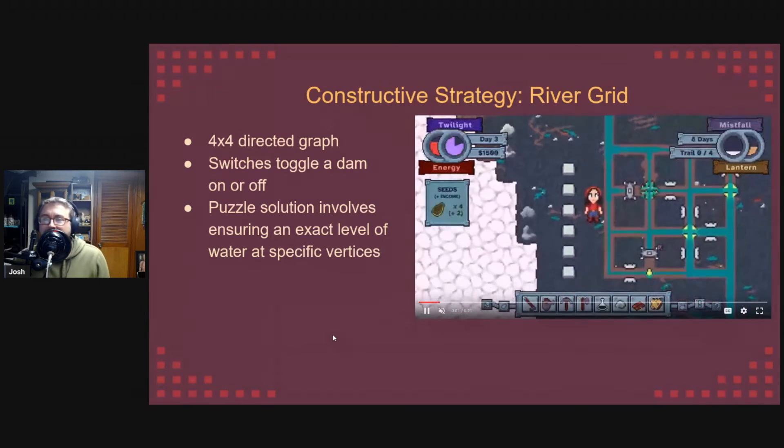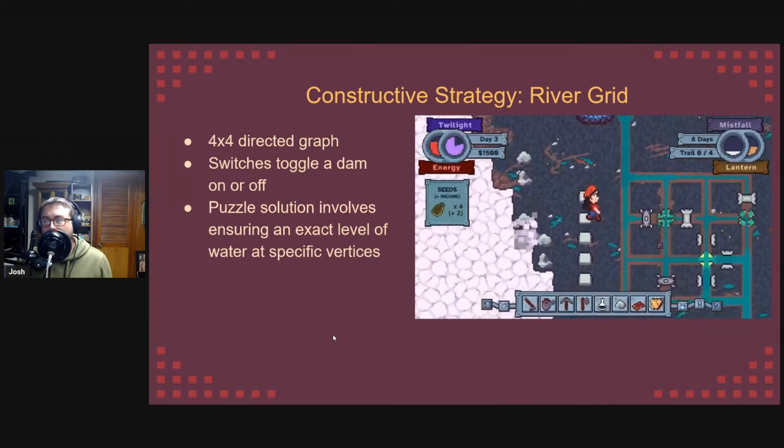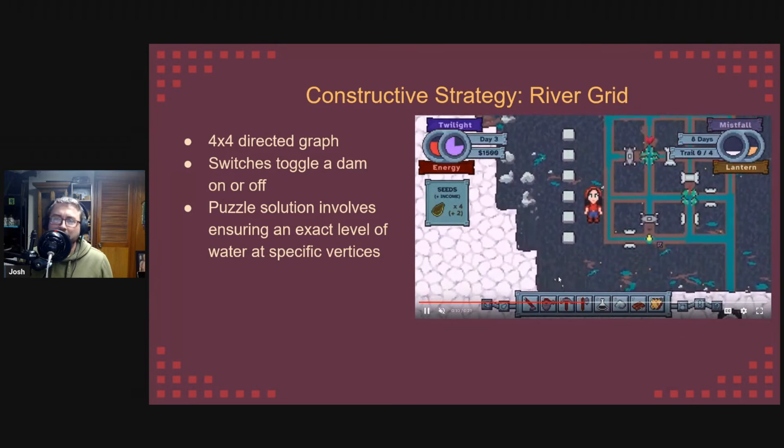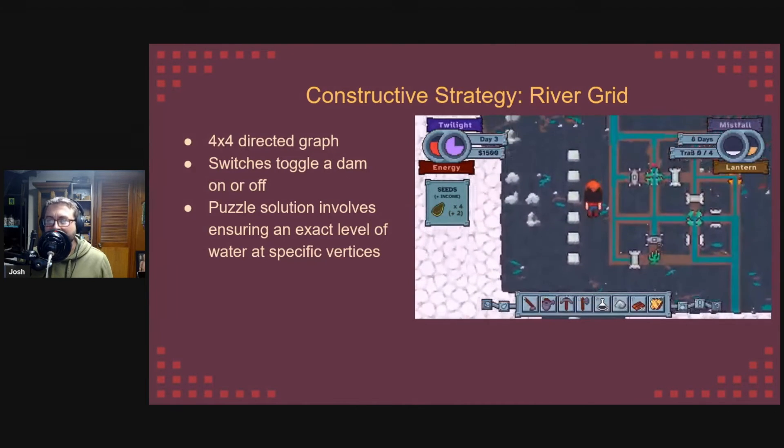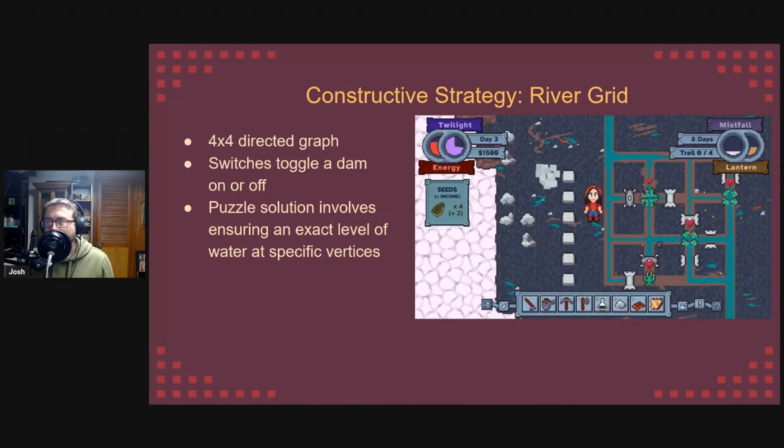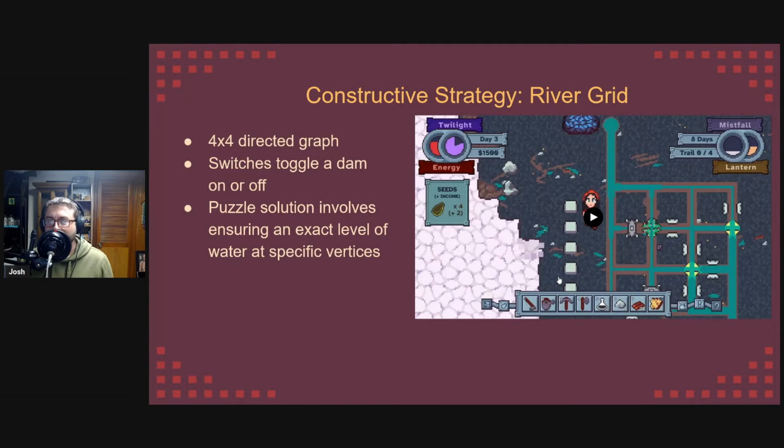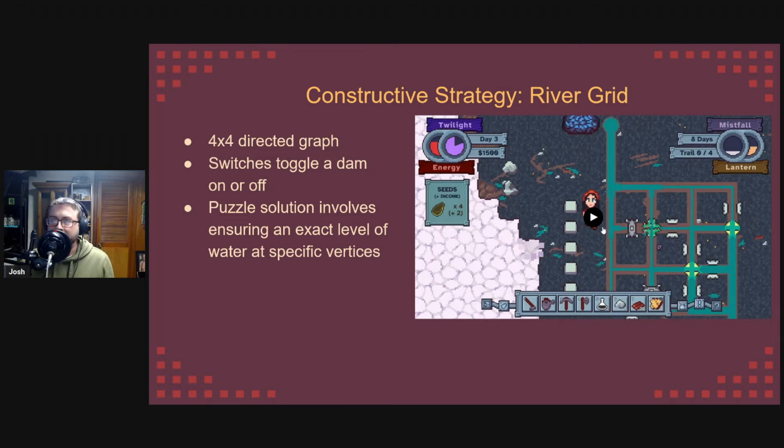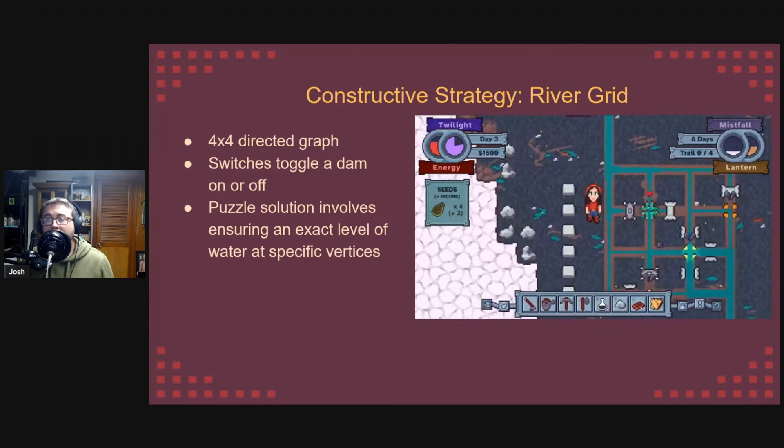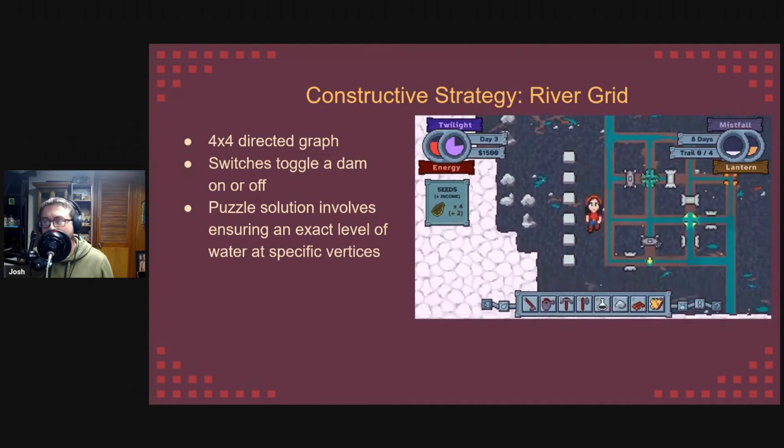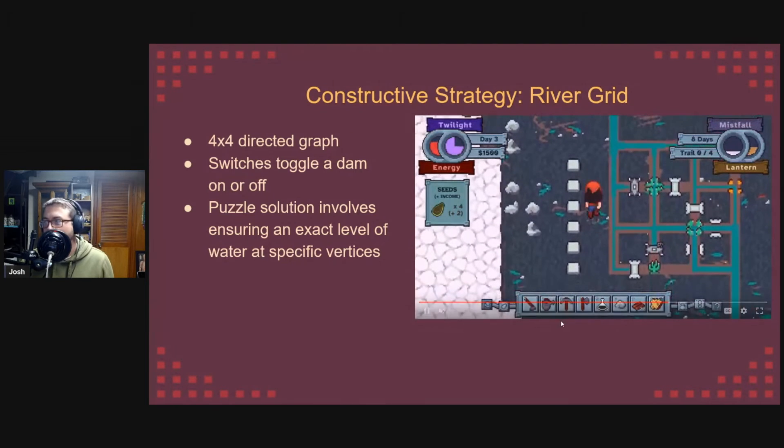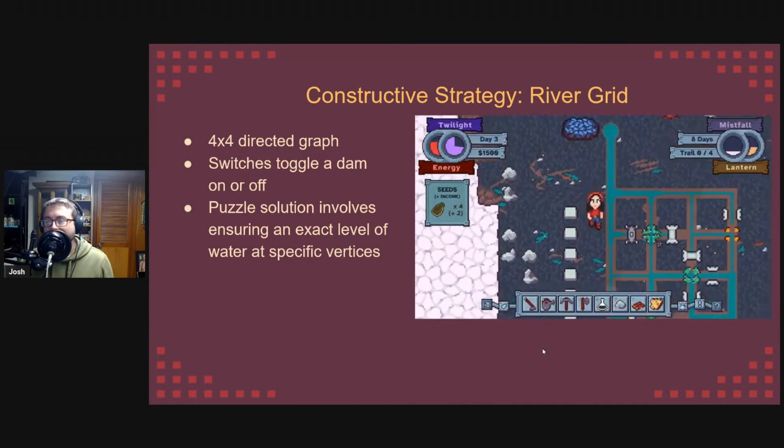So, next up, we're going to take a look at this constructive strategy. Here, we're building up a puzzle so that it has a known solution. I call this particular puzzle the river grid. It might be one of the more complicated puzzles in the game, at least from a design standpoint. Here, a river flows in a four-by-four directed graph. Directed here means that just like a real river, it flows one way, not both ways. Here, the river flows down and to the right. Dams are placed alongside the edges of the grid and they can block the water flow behind them. In order to solve the puzzle, the player must figure out which dams to open and close in order to have the right level of water at specific vertices or intersections on the grid. We'll go through what that means and how that gets built up here.